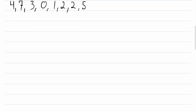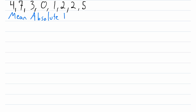Here is our sample data set. This could be data for whatever you want — we could say this is data collected on the number of pizzas that people eat in a week. Our goal is to calculate the mean absolute deviation, or just mean deviation, of this set of data, sometimes abbreviated as MAD, just to keep things nice and short.